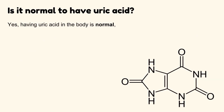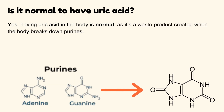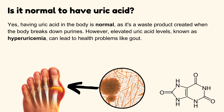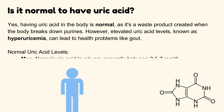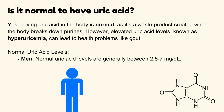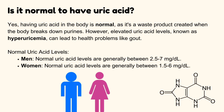Is it normal to have uric acid? Yes. Having uric acid in the body is normal, as it's a waste product created when the body breaks down purines. However, elevated uric acid levels, known as hyperuricemia, can lead to health problems like gout. Normal uric acid levels are generally between 2.5 to 7 milligrams per deciliter in men, and 1.5 to 6 milligrams per deciliter in women.